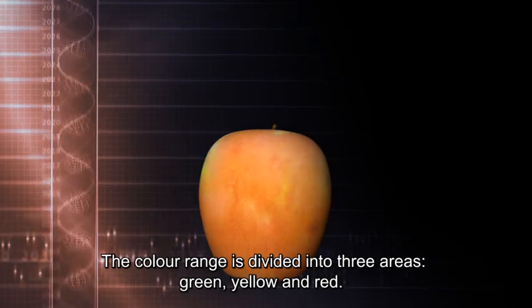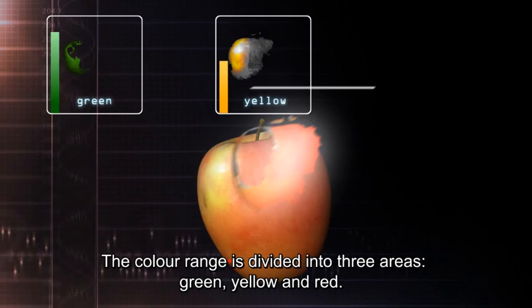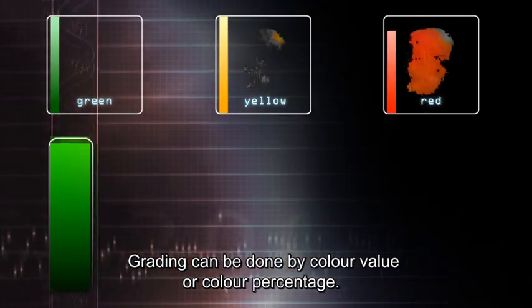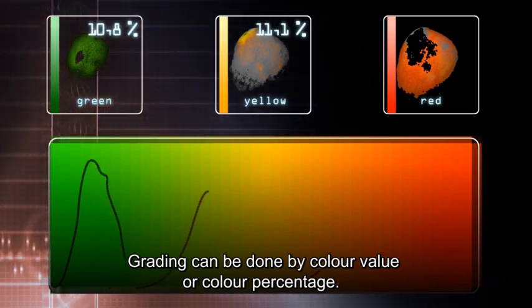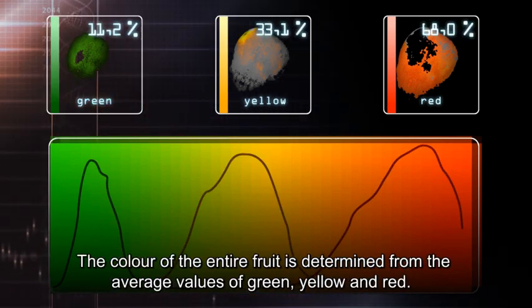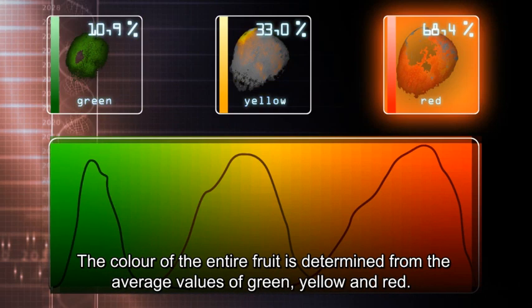The color range is divided into three areas: green, yellow, and red. Grading can be done by color value or color percentage. The color of the entire fruit is determined from the average values of green, yellow, and red.